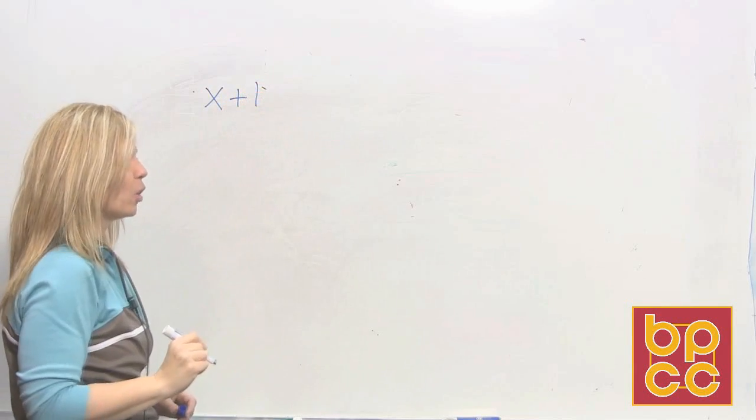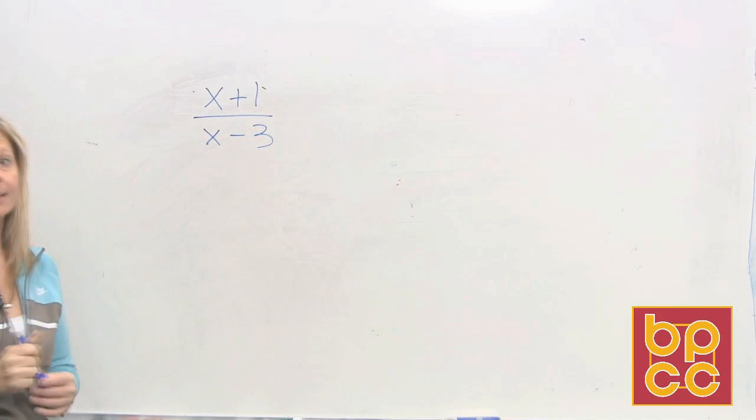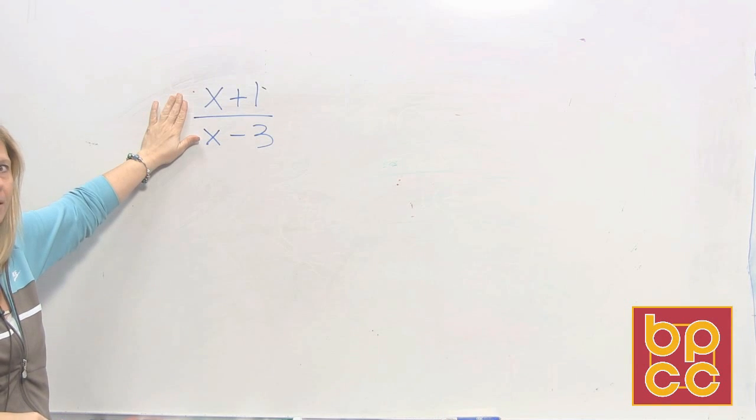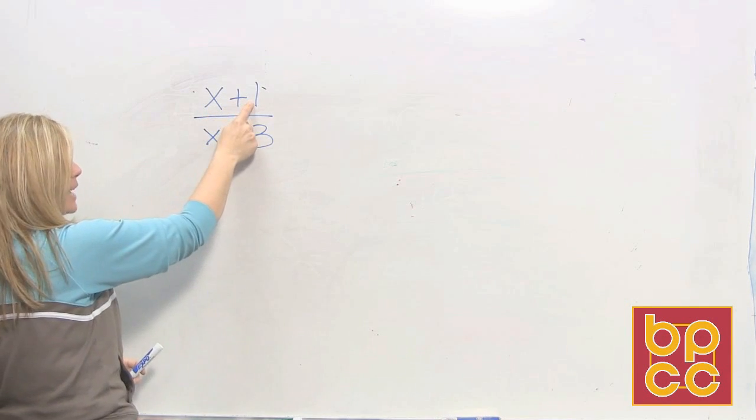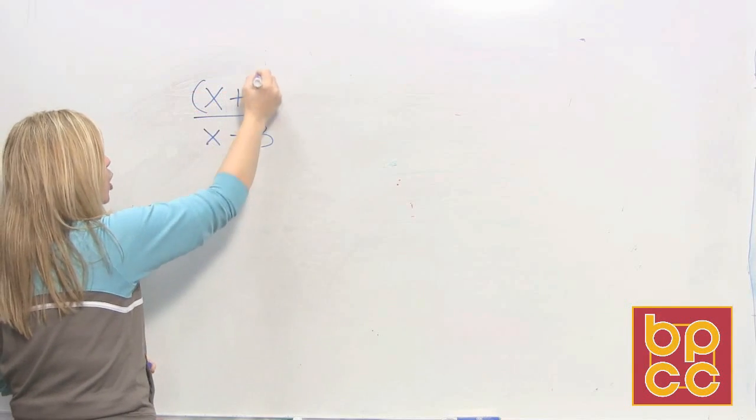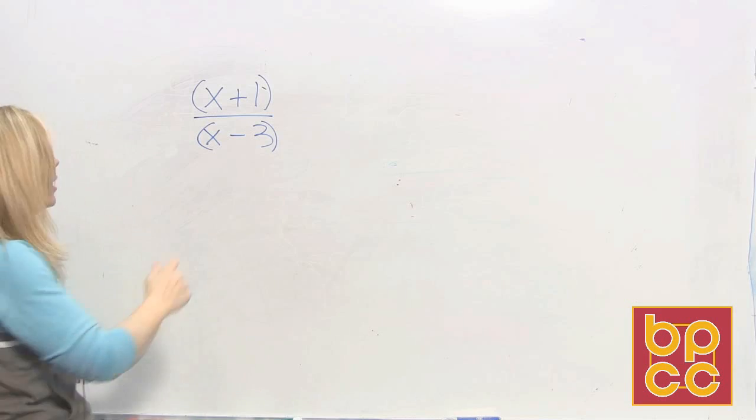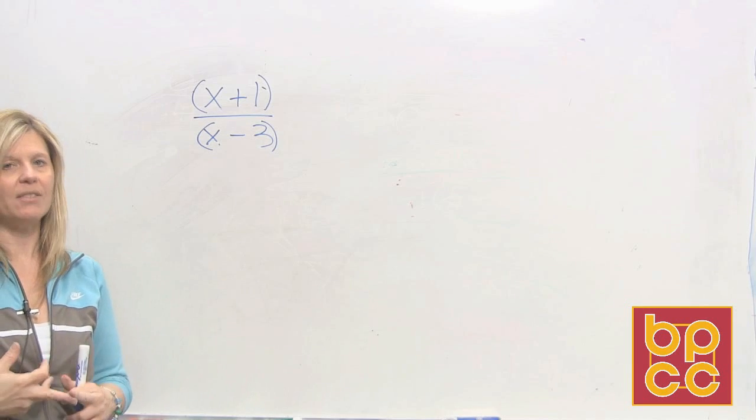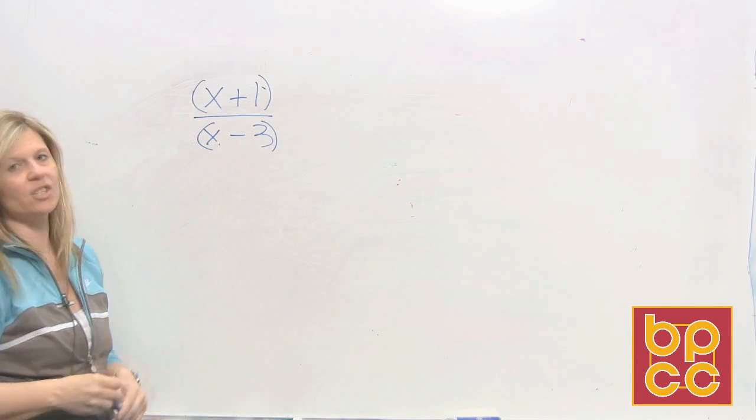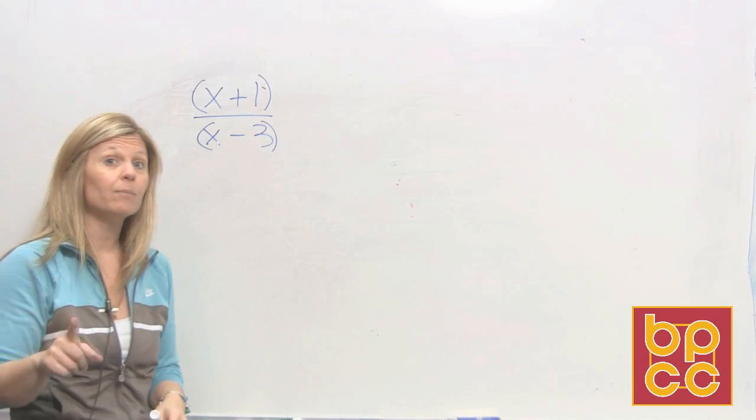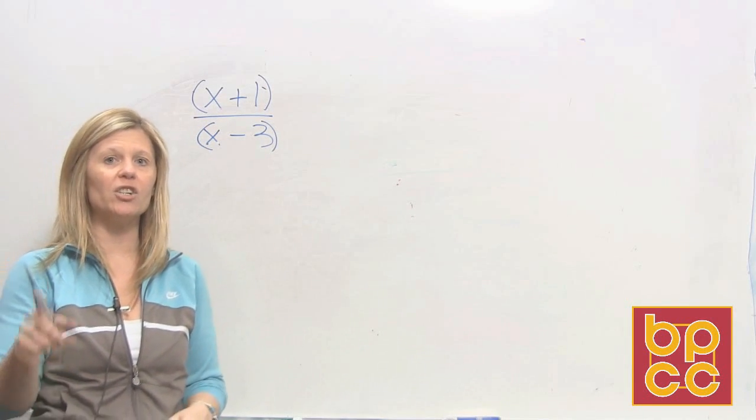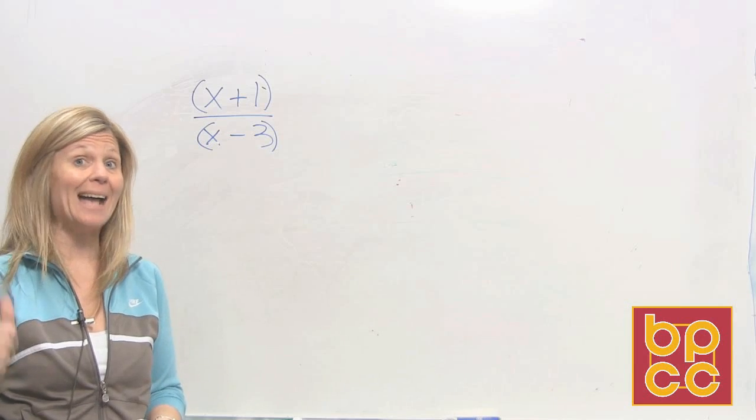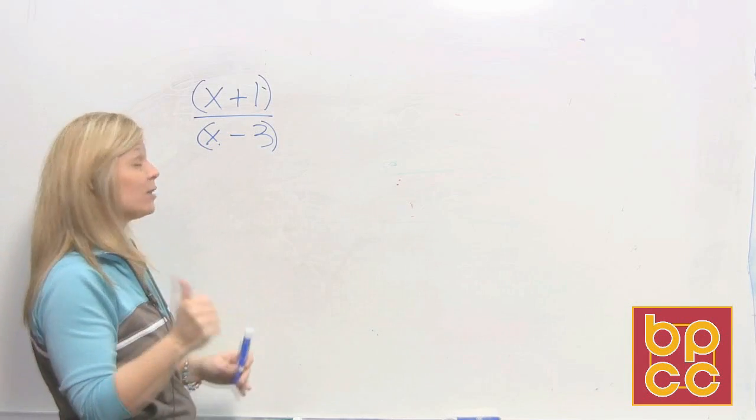I have x plus 1 over x minus 3. Now, the directions do not say to reduce. This fraction is in lowest terms. You can't divide it. Remember, this is not connected by multiplication. This is not connected by multiplication. These terms are stuck together. And if you know about factoring, none of your rules of factoring work here. Neither have a GCF. Neither expression is a difference of perfect squares. And neither expression is a trinomial. This fraction is in lowest terms. So the directions here say, what value of x makes the fraction undefined? The two key words are what value of x. Value means you want to know what x is as a number. So I want to know what number can go in x.